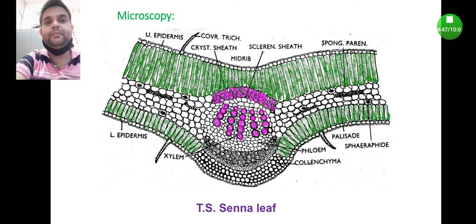That's why it is an example of ISO bilateral leaf: ISO means same, bi means two, lateral means side. An example of ISO bilateral leaf.